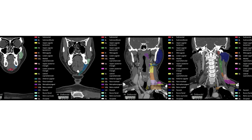This is a color-coded CT which demonstrates the lymph nodes in the head and neck. As we saw before, here is the submental and the submandibular, which are in level 1. Level 2 is seen here in yellow and green, which is the upper jugular. Level 3, which is seen here in orange, is the mid-jugular. And here is level 4, which is the lower jugular.